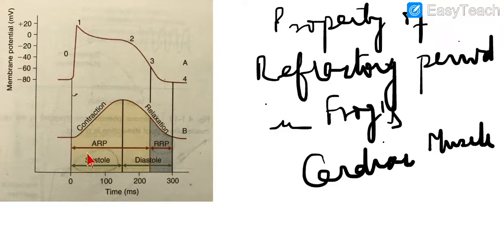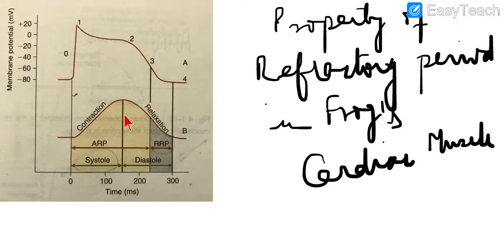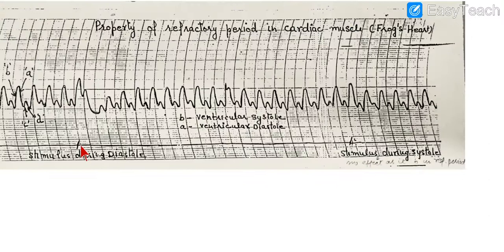The absolute refractive period is present during ventricular systole as well as the earlier part of diastole. In the late part of diastole, there is still a refractive period, but that is the relative refractive period. During the absolute refractive period, the muscle won't respond to any stimulus of any strength. During the relative refractive period, a stimulus strong enough to generate an impulse can produce a response.